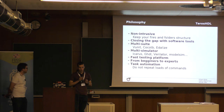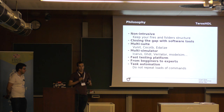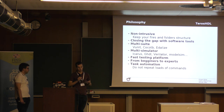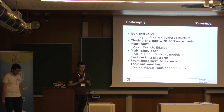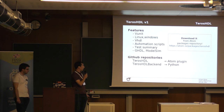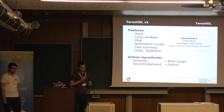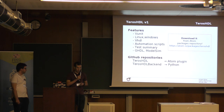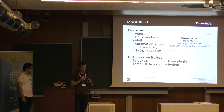We also think of the software as something that could be used by everybody. If someone who wants to start with FPGA development could use the software without knowing a lot about simulators or the tools — we wanted it to be easy to use. In the first version we used mainly VUnit, Linux, VHDL, and put everything together in a graphical interface. We had two repositories: the Atom plugin and the backend.